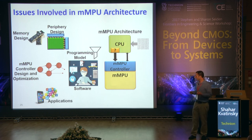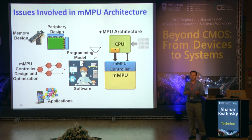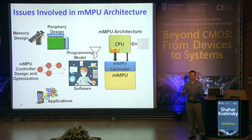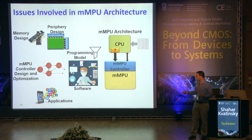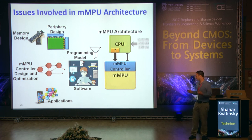Lastly, we need to understand what applications will benefit from this approach. Some applications have a small amount of data processed with high locality, so caches are very efficient for them. We need applications that benefit from massive parallelism and poor data locality.